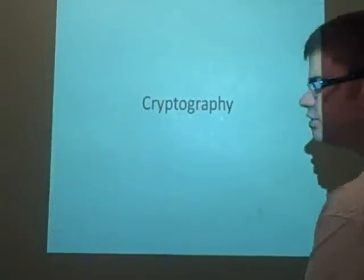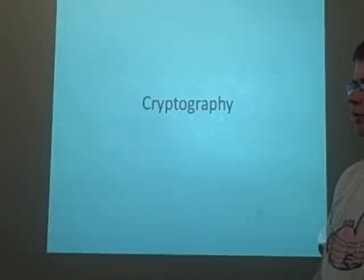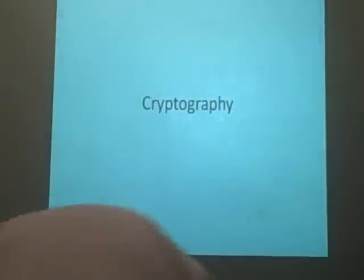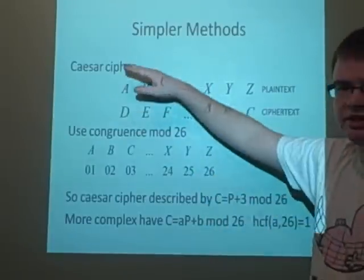This is a lecture on cryptography and it's on the number theory course. So you'll be using Euclid's algorithm at some point. With cryptography there are some simpler methods which you might have seen before. You can get these with spinning wheels, which is the Caesar cipher.